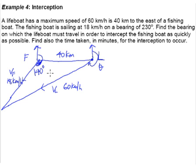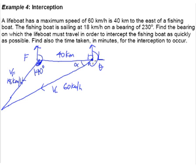We're looking for theta, but you can't get theta directly. Therefore you have to first find this other angle — we'll call it alpha. Because the moment you know alpha, and you know that this side is 90 degrees, then theta equals 360 degrees minus 90 degrees minus alpha. So the focus now is on how to find alpha.